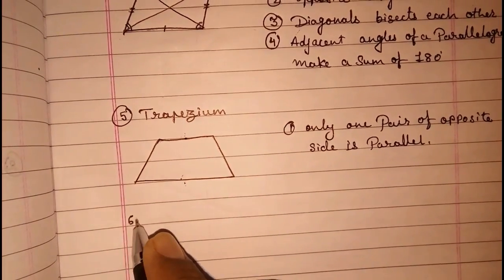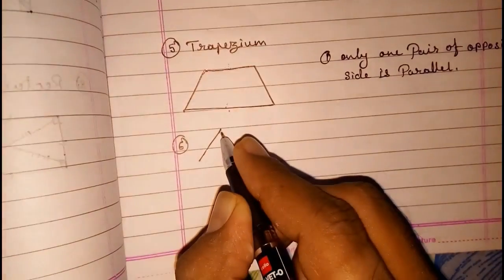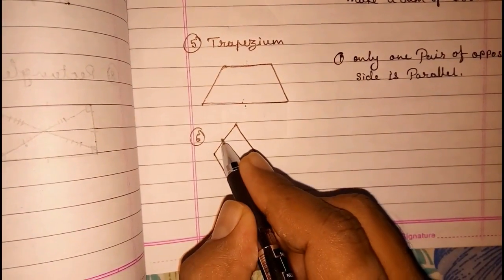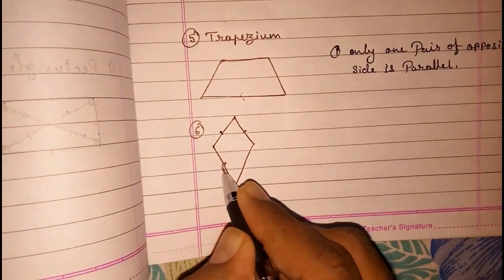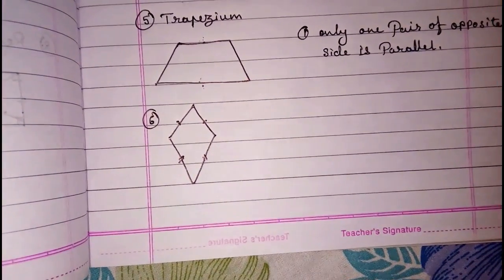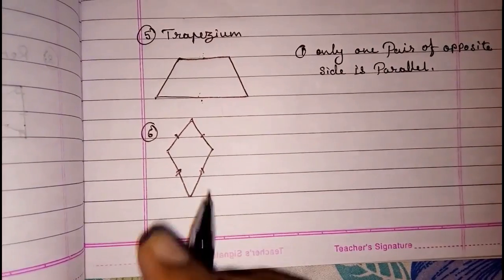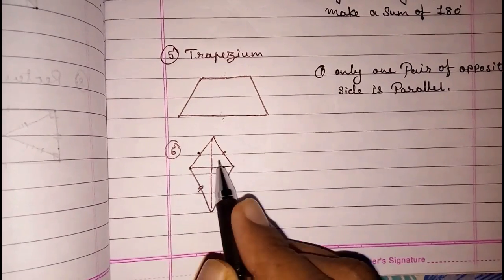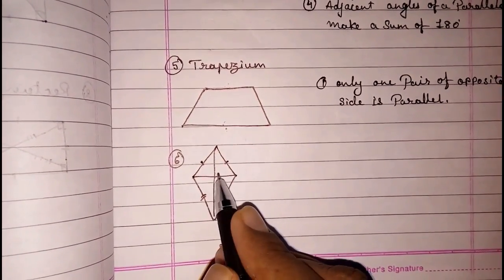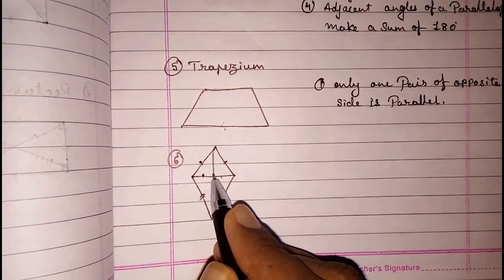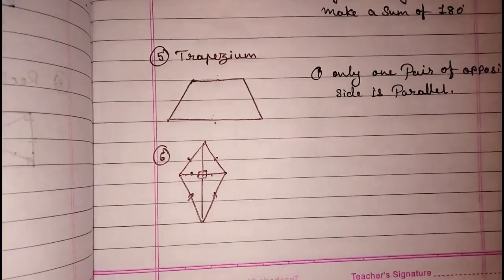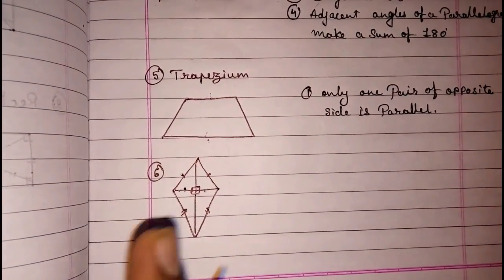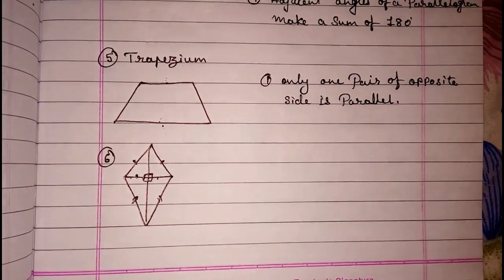One more type is the kite. This is not very important but it is in the syllabus so we have to study it. In a kite, both pairs of adjacent sides are equal. The diagonals: only one of the diagonals is bisecting, not both. One diagonal bisects the other. The diagonals intersect perpendicularly. Thank you.